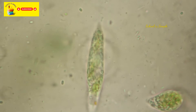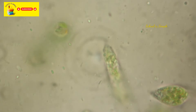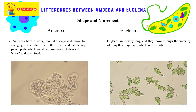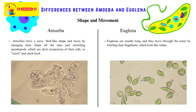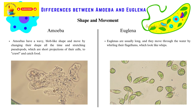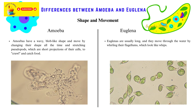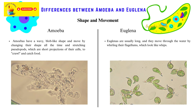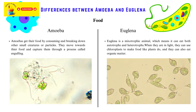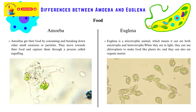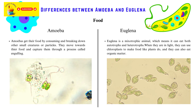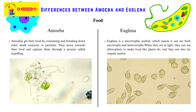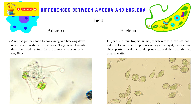Differences between amoeba and euglena: both are single-celled protists, but they differ in important ways. Shape and movement: amoebas have a wavy, blob-like shape and move by stretching pseudopods — short projections of their cells — to crawl and catch food. Euglenas are usually elongated and move through water by whirling their flagella, which look like whips. Nutrition: amoebas get their food by consuming and breaking down other small organisms or particles through engulfing. Euglena is mixotrophic — it can use chloroplasts to make food through photosynthesis when in light, and can also consume organic matter.